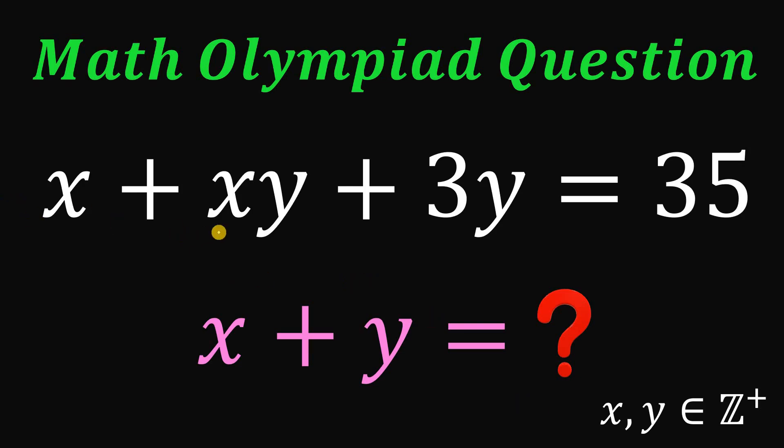Given this equation, x plus xy plus 3y equals 35. And our goal is to find the value of x plus y, provided that x and y are both positive integers. Now you can pause this video if you want to give this problem a try.